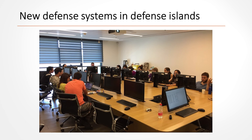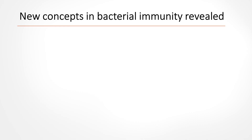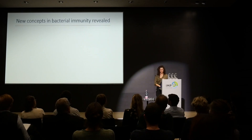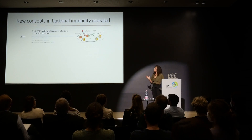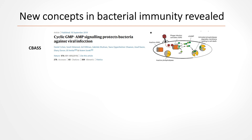You might recognize some faces in there. To date we've verified over 50 new defense systems, essentially creating a platform for discovery of defense systems in bacteria, and the number keeps growing. The systems we looked into more deeply revealed interesting new concepts in bacterial immunity. For example, we found the c-based system that uses a small molecule signal to activate defense — this turned out to be a recurring theme, with other systems using different signals but the same concept.